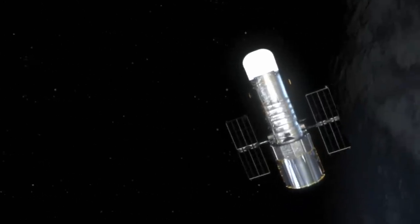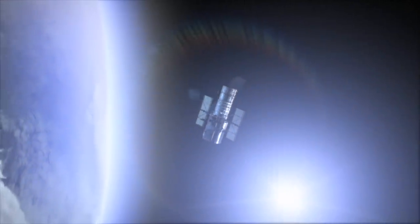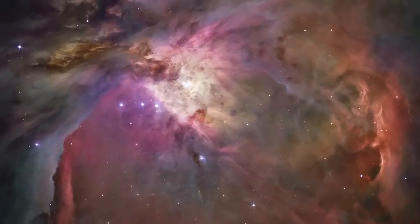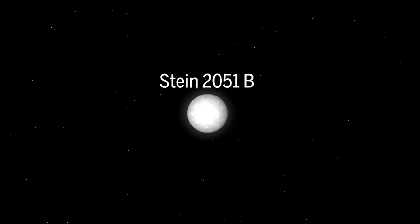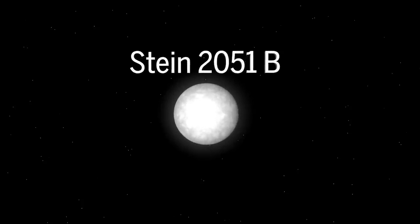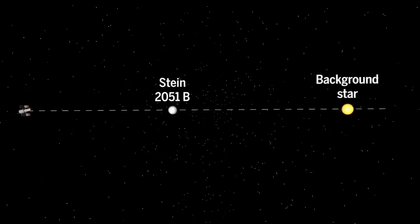Recently, researchers realized that the keen eyesight of the Hubble Space Telescope might be able to spot such movement, so when looking for stars that might soon be in alignment, they found that the nearby white dwarf Stein 2051b was set to pass nearly in front of another star in March of 2014.